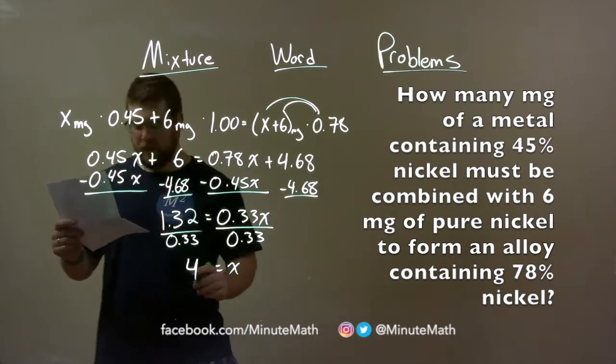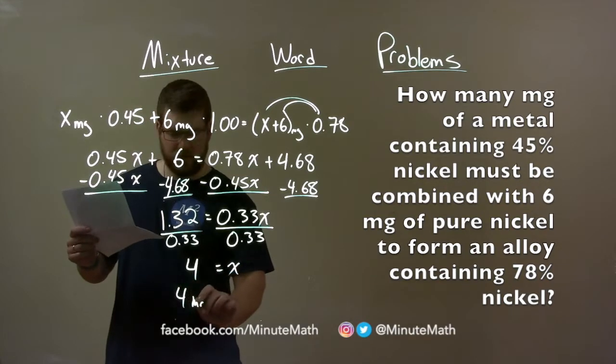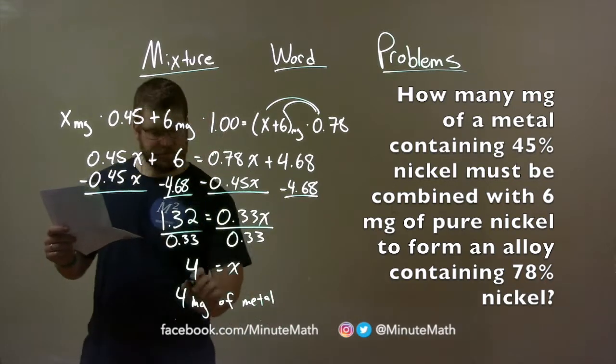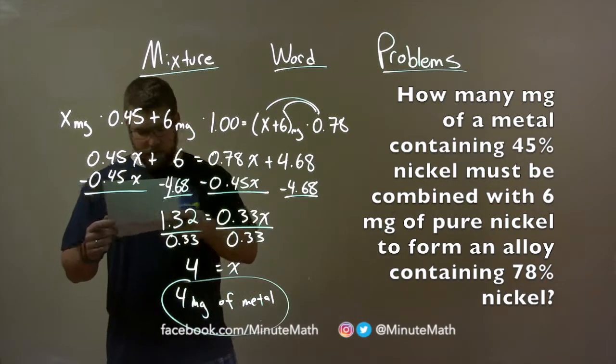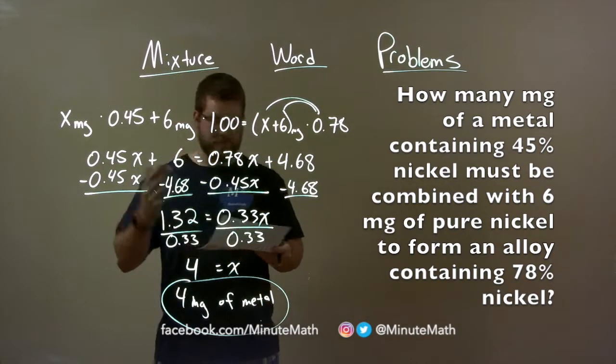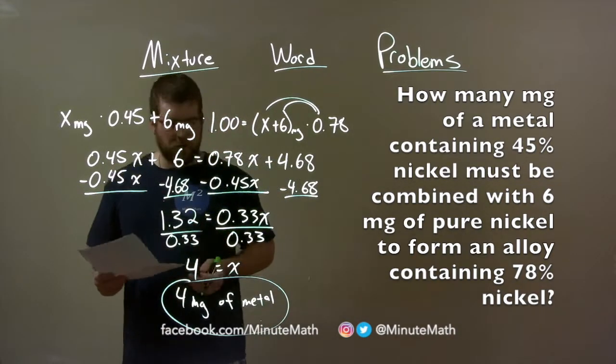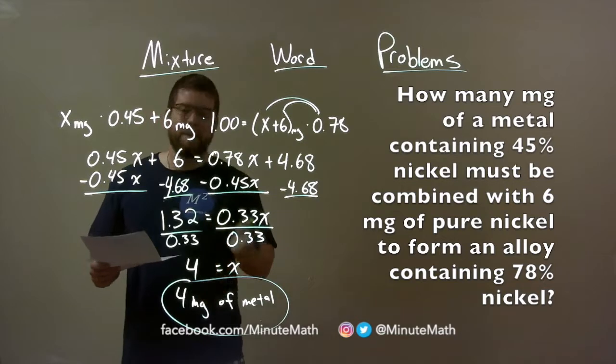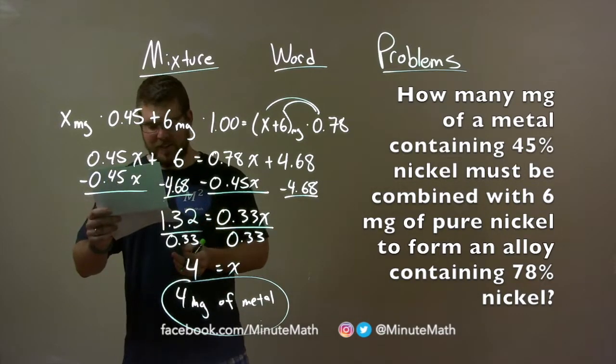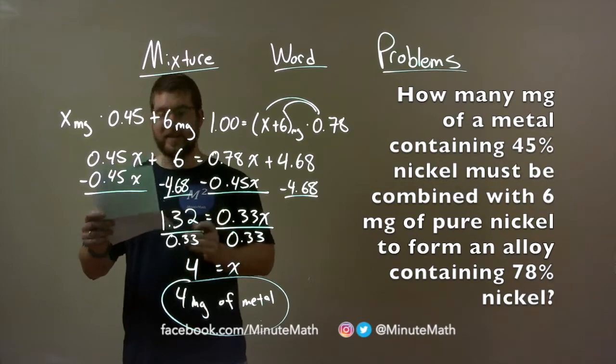Our final answer is just 4 milligrams of metal. Now if you look back at the problem, they said how many milligrams of metal containing 45% nickel must be combined. So 4 milligrams of metal must be combined to our final alloy to gain 78% nickel at the end.